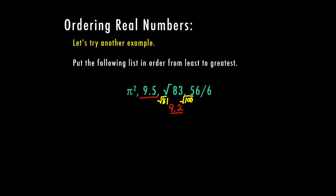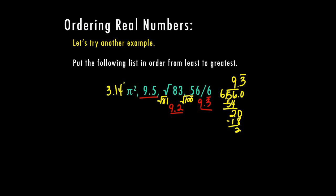So now we have 56 over six. In order to turn this into a decimal, we're going to need to divide. Six goes into 56 nine times, which is 54. I have two left over, so if I add my decimal and bring down my zero, it's going to go in three times, and I do know that I'm going to have a remainder of two. So I can see pretty quickly this is going to be repeating. So 56 sixths is 9.3 repeating. And then we have pi squared — I do know that pi is 3.14 — and if I were to square that using my calculator, I am going to end up with 9.85. So there I have my four numbers.